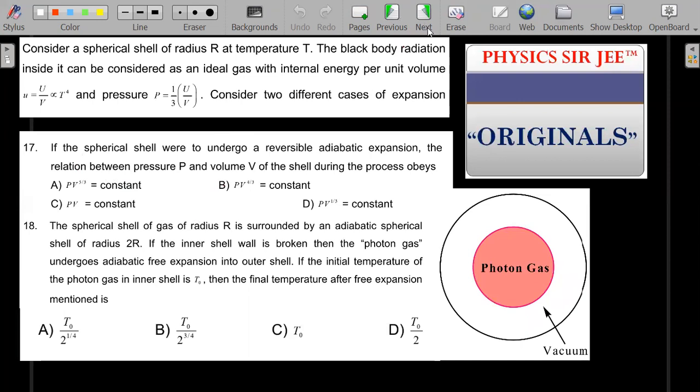Assuming you have tried, I'll go ahead with the solution now. The spherical shell of a gas of radius R is surrounded by an adiabatic spherical shell of radius 2R. That means here there is a gas of radius R and this is surrounded by a radius 2R. If the internal wall is broken, then the photon gas undergoes adiabatic free expansion into the outer shell. If the initial temperature of the photon gas in the interior is T_0, then the final temperature after the free expansion mentioned is—he is given four possible values of the temperature when this wall breaks and the photon gas goes into this entire structure.